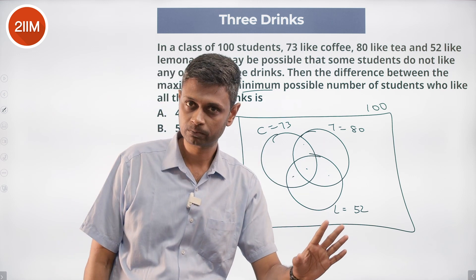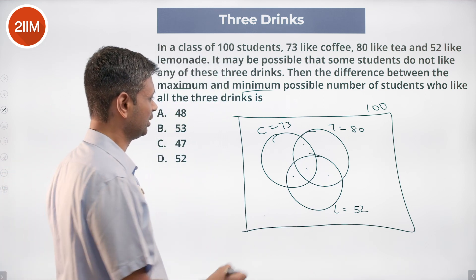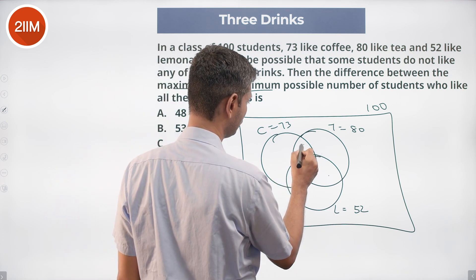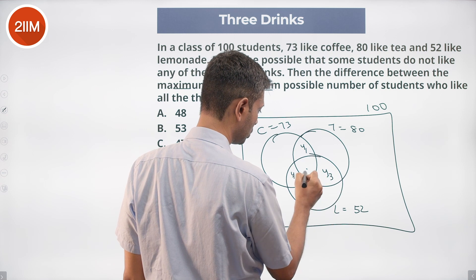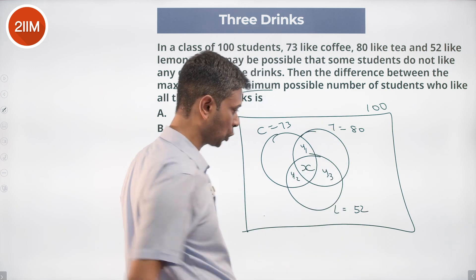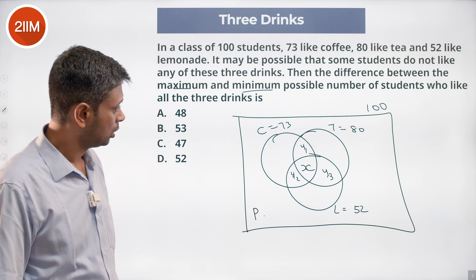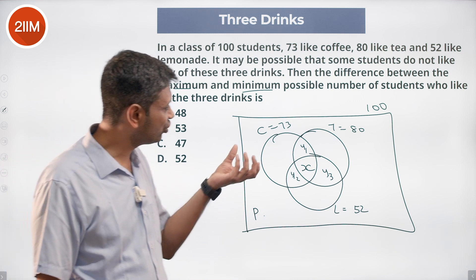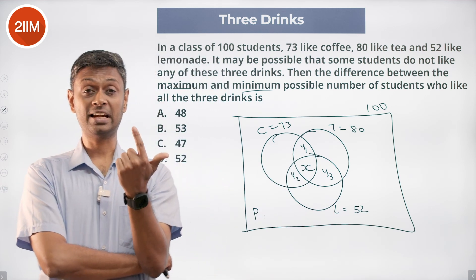So how do we do this? It's a very beautiful algebraic method for this. Call this as y1, y2, y3. Call this number as x, outside let it be p.